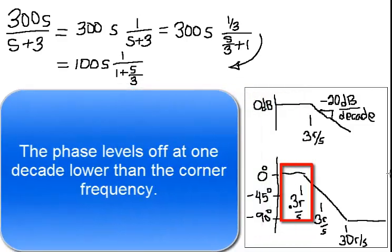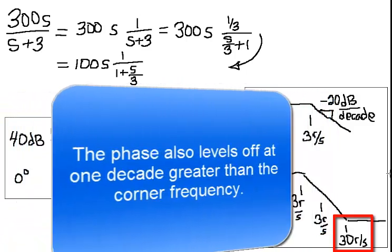The phase levels off at one decade lower than the corner frequency. The phase also levels off at one decade greater than the corner frequency.